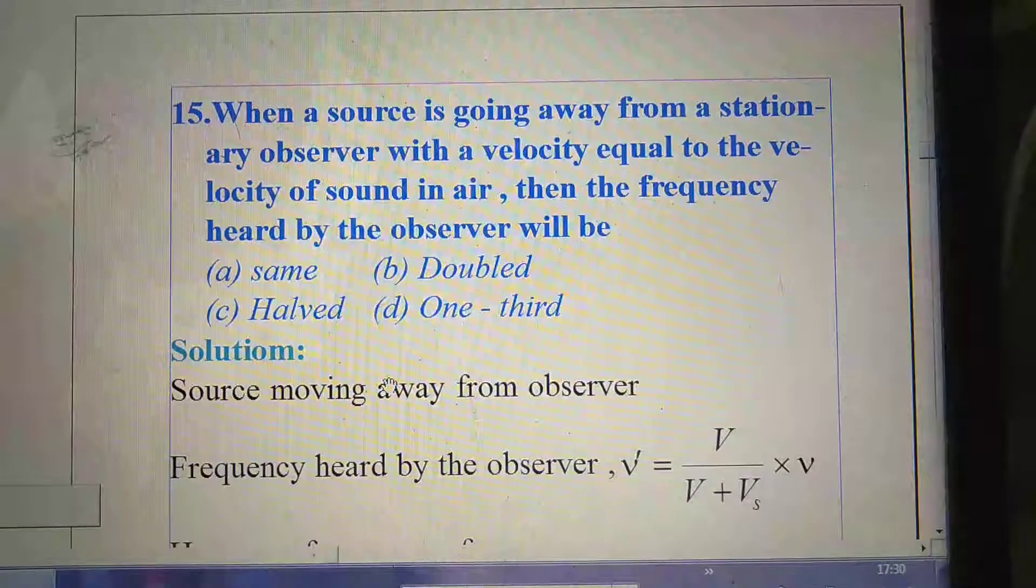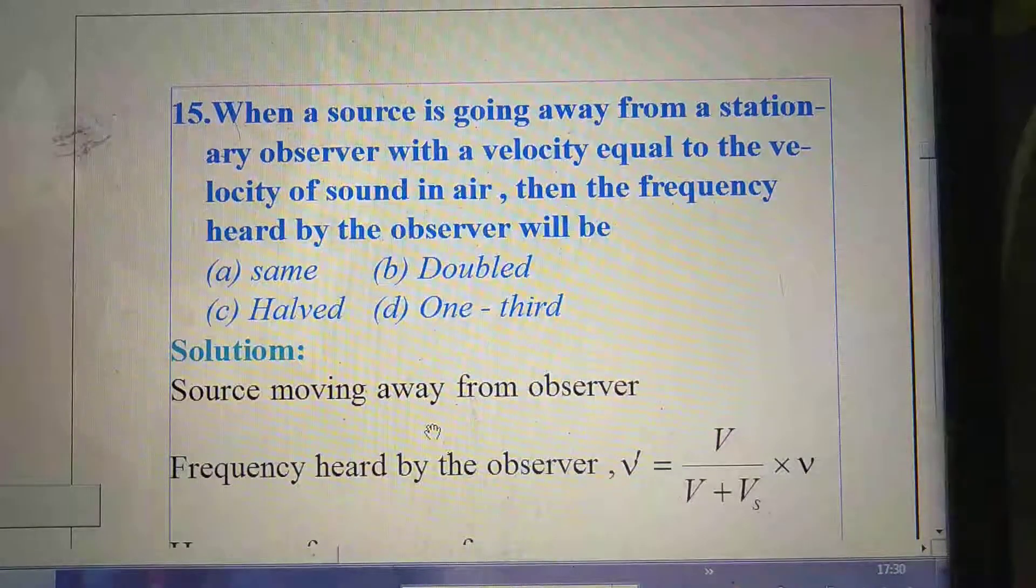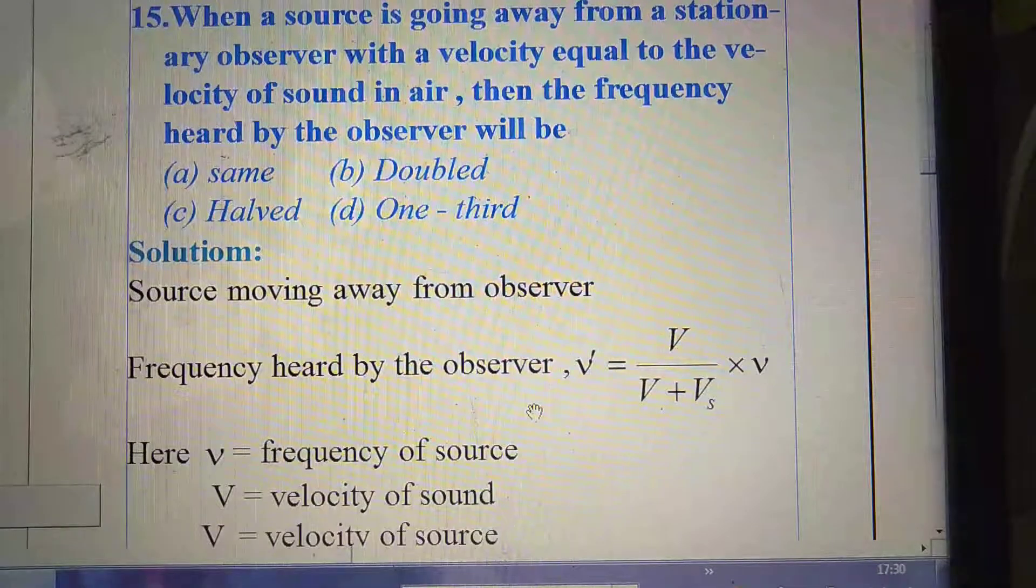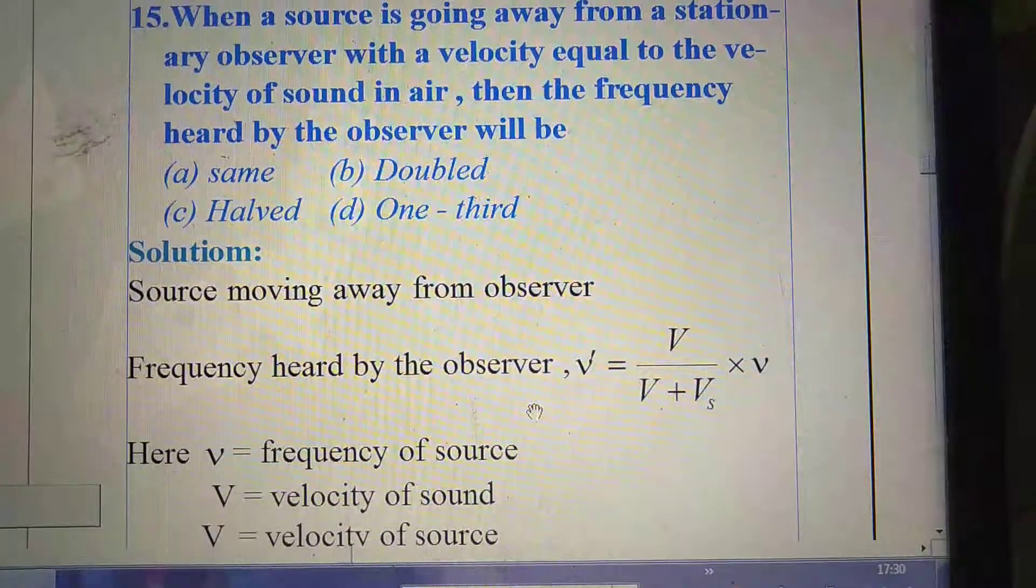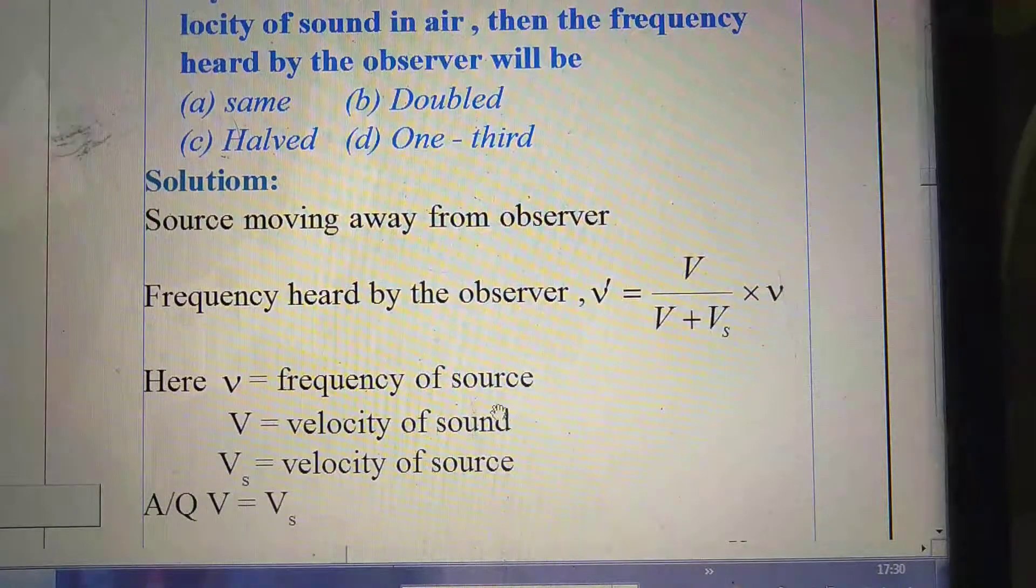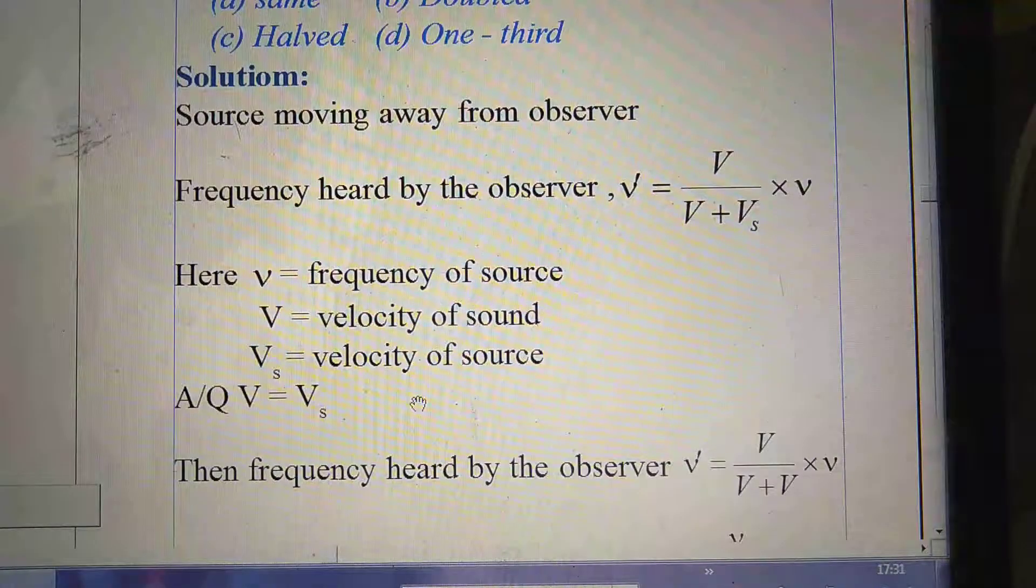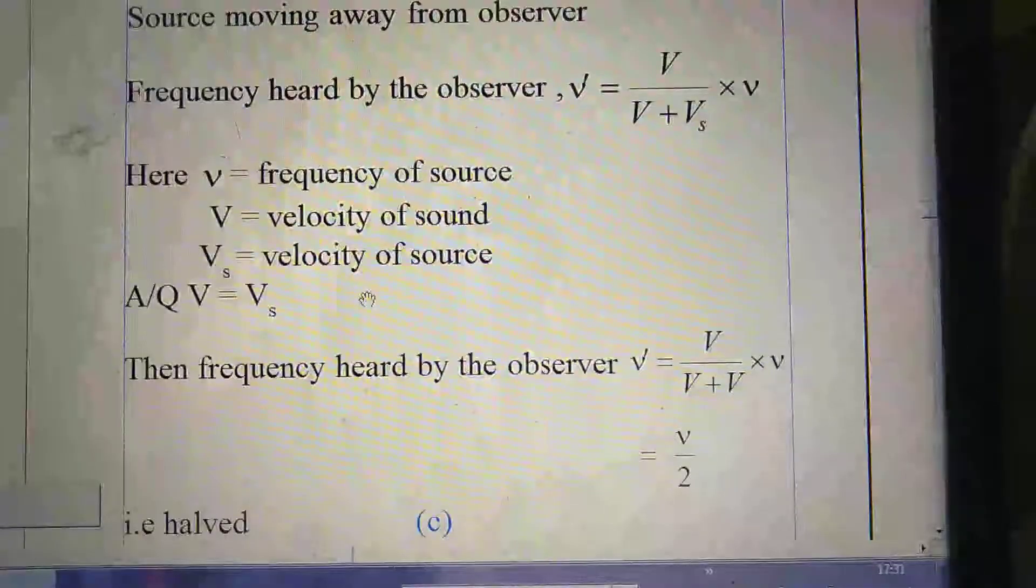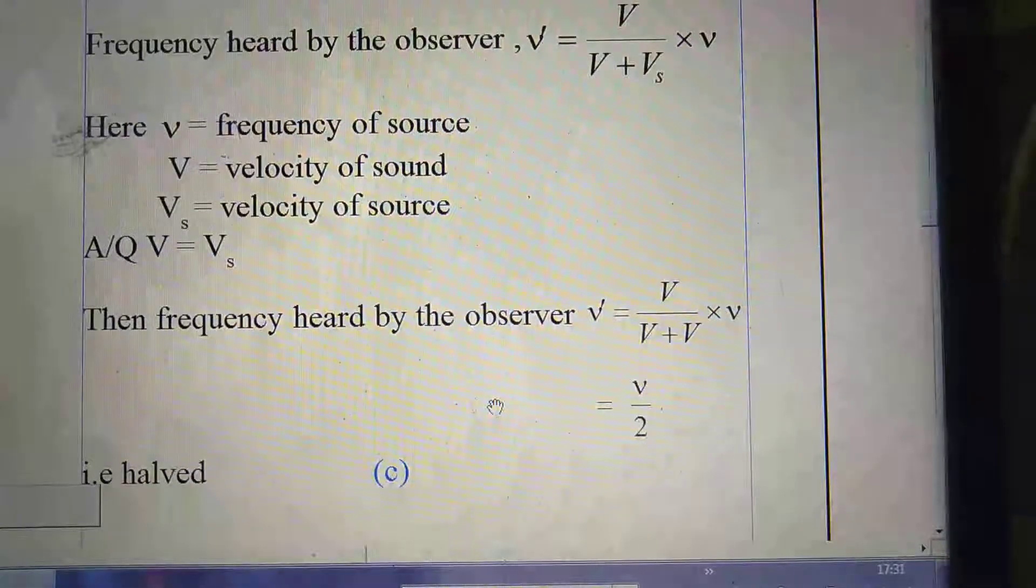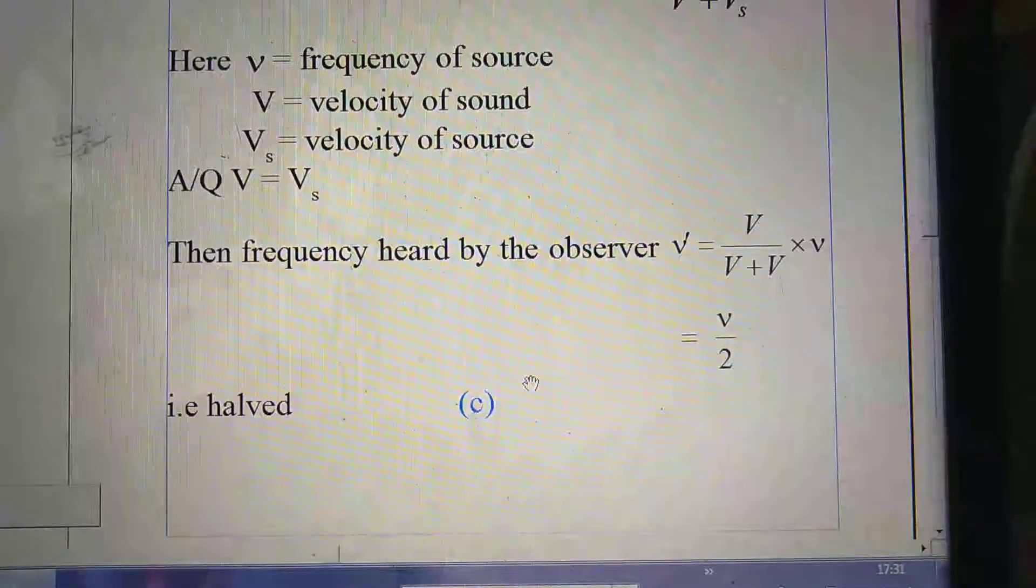So here we have to find out the apparent frequency. Source moving away from the observer. Under such situation, apparent frequency heard by the observer as ν' = V / (V + Vₛ) × ν. Here V is the velocity of sound, Vₛ is the velocity of the source and ν is the frequency of the source, that is original frequency. As per question, we are given V = Vₛ. Insert the value and after calculation, we find out the frequency heard by the observer as ν/2, that is half of the original frequency. So the right option is C, that is halved.